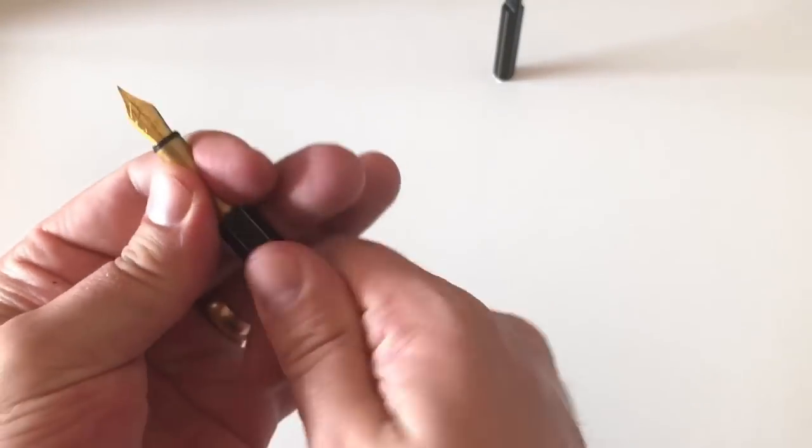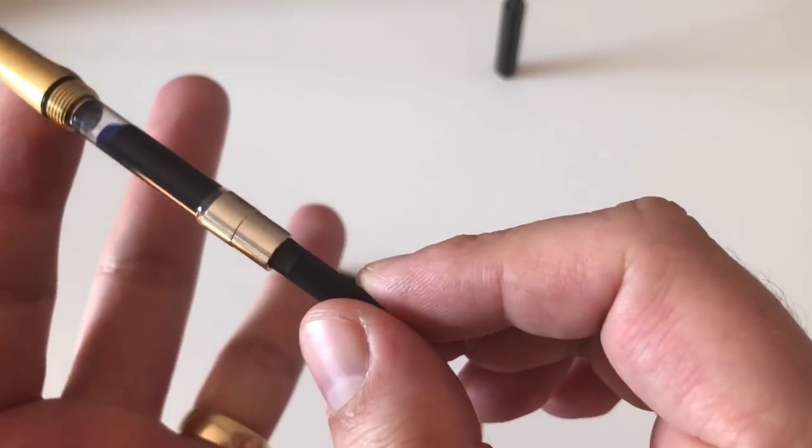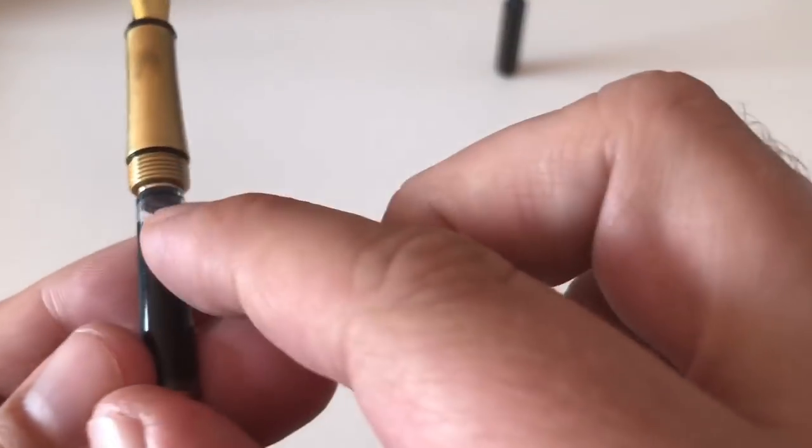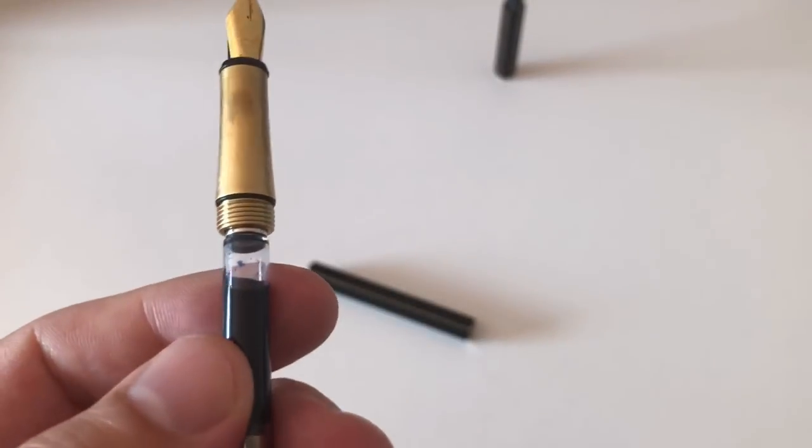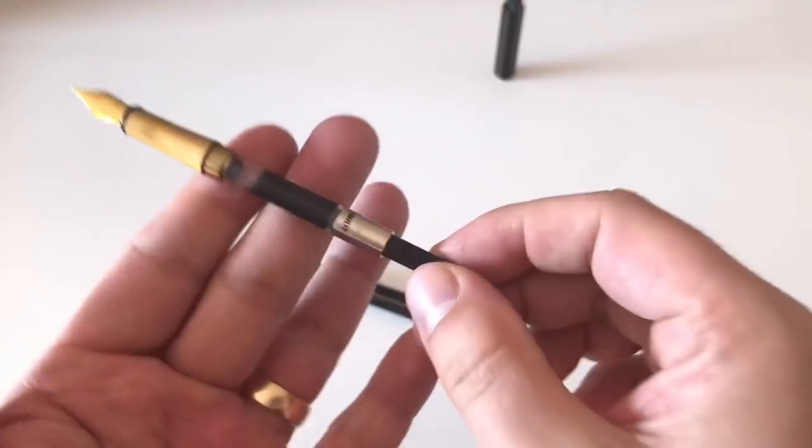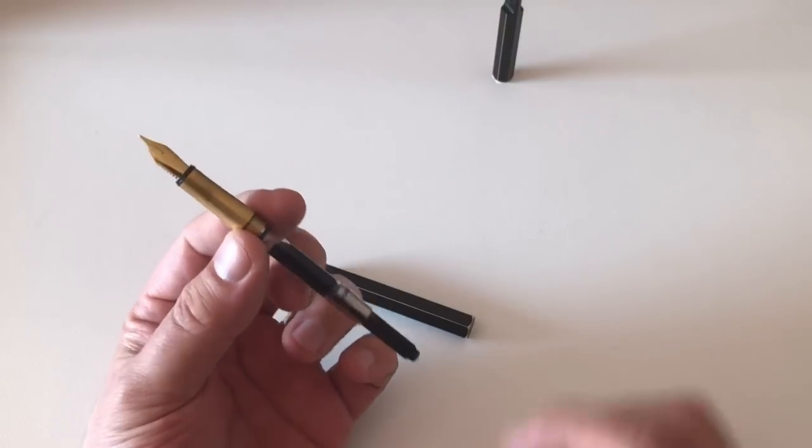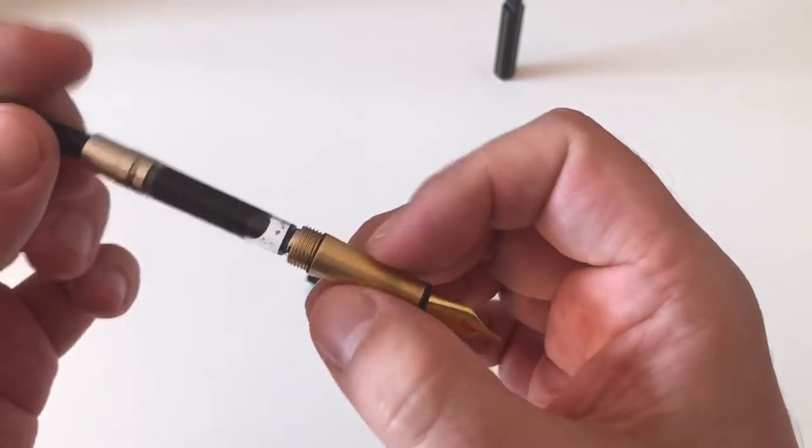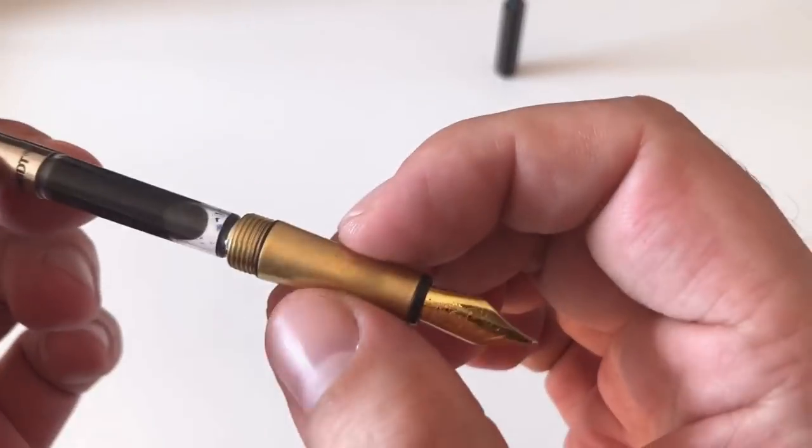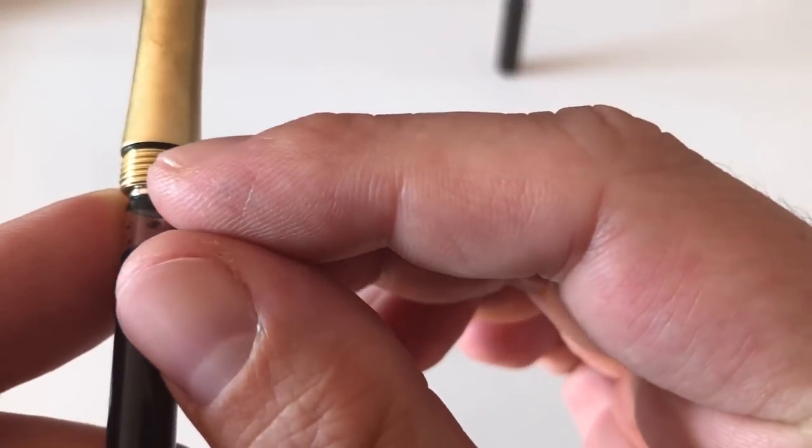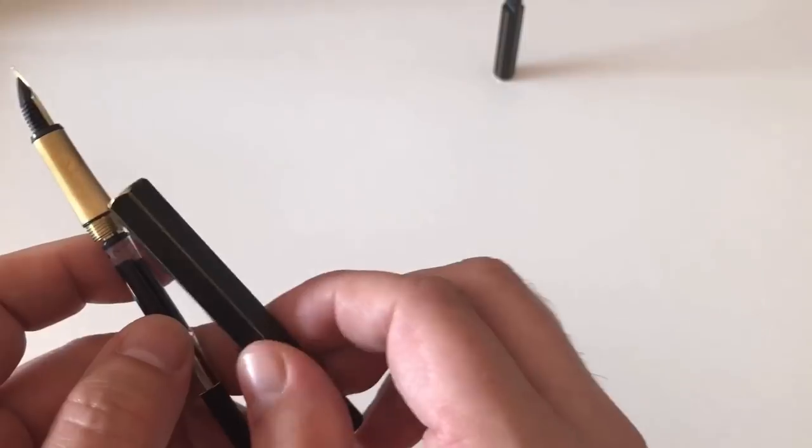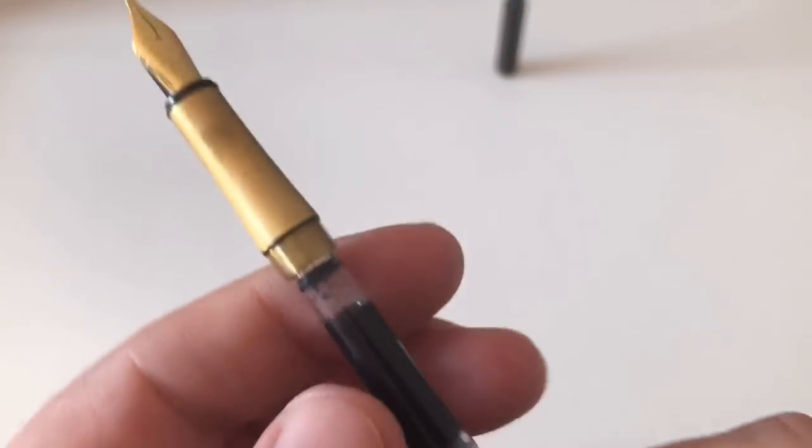Let's open up the pen. It's a cartridge-converter filler. 140 euros—you expect it to come with a converter, and it does. Comes with a Schmidt converter that fits really nice and snugly in that section here. As you can of course also see, it's a standard international size, so you can of course put in standard international cartridges. The short ones will definitely fit. Not sure if the long ones will fit.